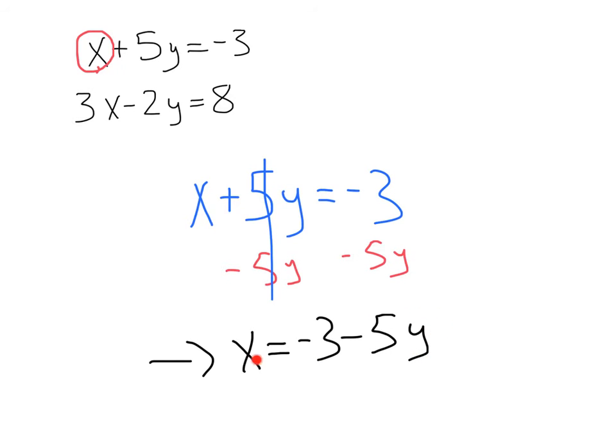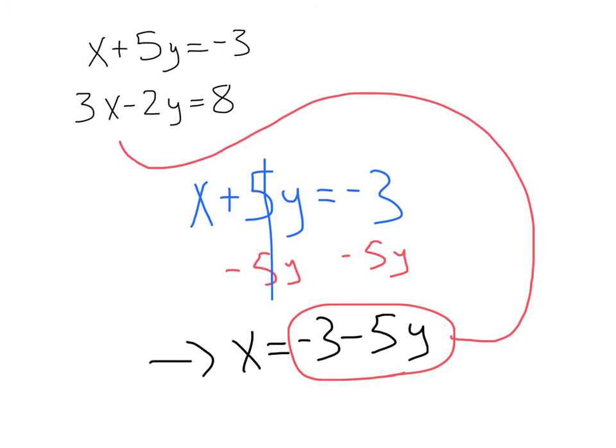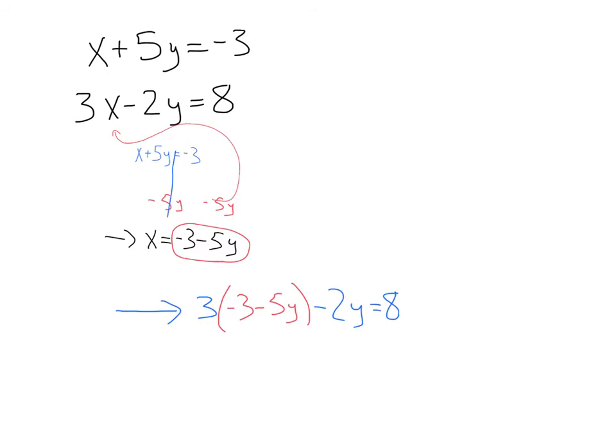All right, now we're in business. Because we know what this x is here, we can sub in this value, negative 3 minus 5y. Let's take that and swoop it right over here to our other equation and plug it right in there for that x value. Doing that, we're going to get 3 times x or negative 3 minus 5y, subbing that in, minus 2y equals 8. Again, coming from this second equation.